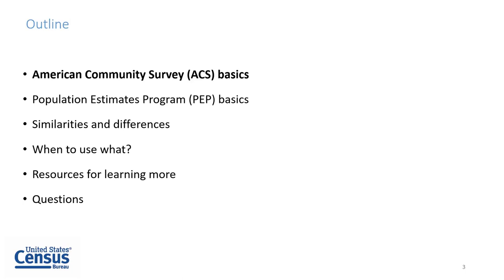Today we will go through a few things. I will be going over the basics of the American Community Survey, including the history, how data are collected, topics and geographies included, and tools to access. Next, Ryan will go over the basics of the Population Estimates Program, including a summary of what estimates the program disseminates, how the estimates are made, and when and where you can access them. Then we will share similarities and differences in the estimates released by our areas, followed by a general overview of when to use what with some examples. If you have any questions during the presentation, please use the chat feature on WebEx.